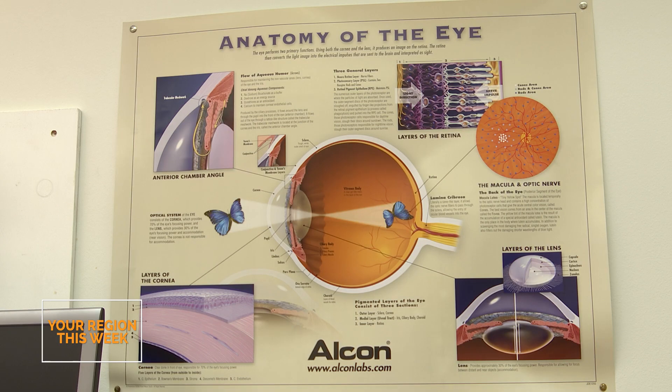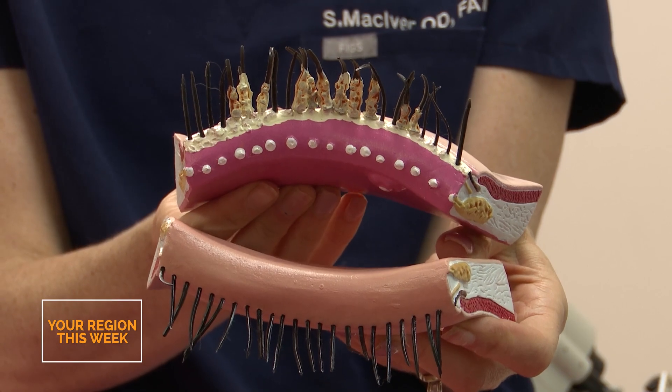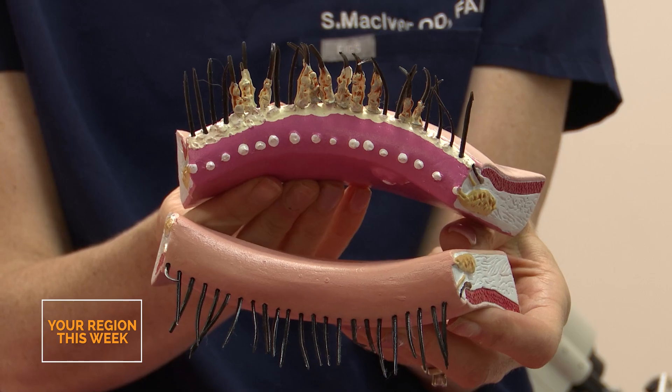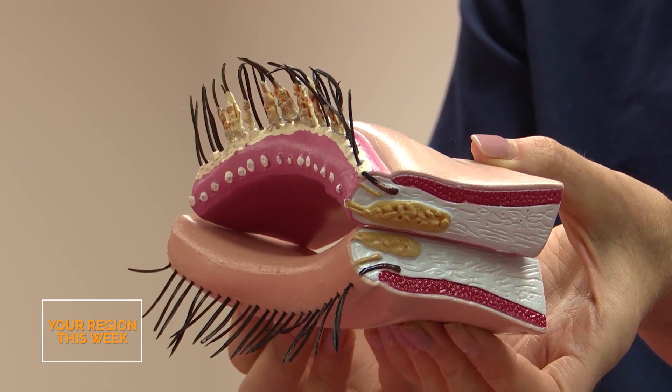Dry eye is a very common condition that many people experience at all ages. It's a disease that affects the quality of tear production in the eye and can happen from a number of different causes. The eye has many components to what we call the ocular surface — a part that produces tears and a part that produces an oil-type substance that helps with the integrity of the tear film. Any disruption to any part of the ocular surface can lead to dry eye.